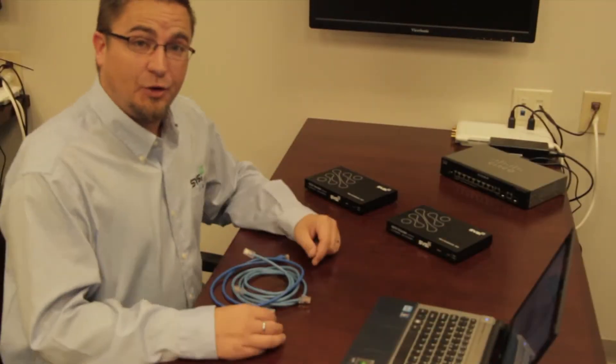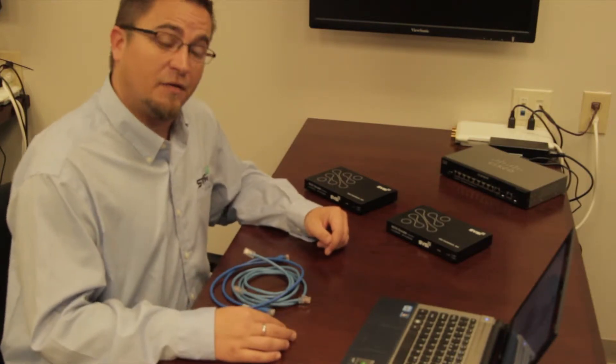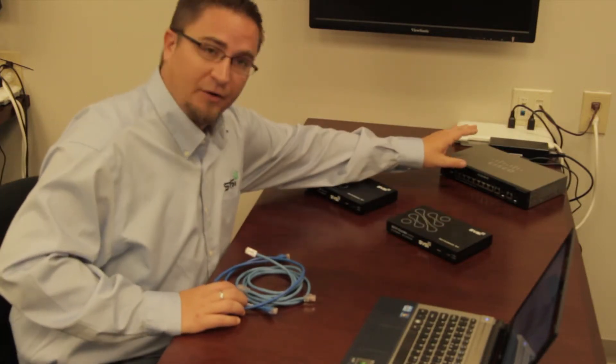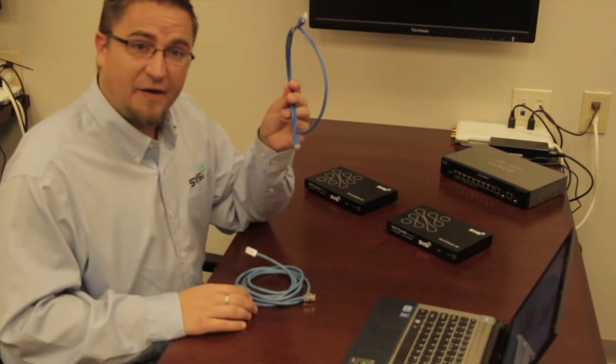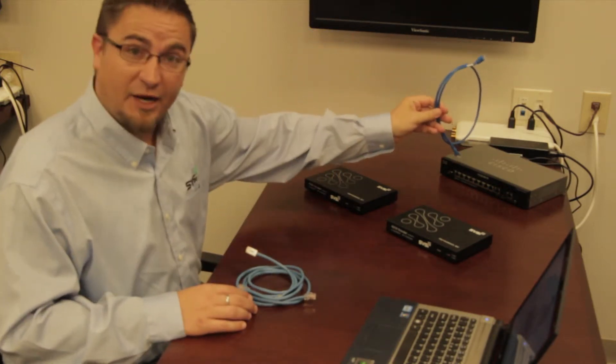Alright, so you've got your units unboxed and let's talk about a typical installation and what cables would be needed for that. I've got my decoder, my encoder, and my pre-configured Cisco PoE switch. I'm going to need a Cat5e or better network cable to connect my decoder and every device to the switch.